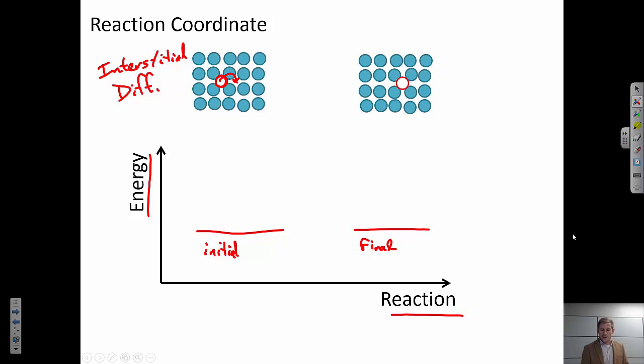But something has to happen to go from the initial to the final state. We can't miraculously disappear and reappear. So in this case, this atom would have to squeeze its way between these two other atoms. And you can see they're pretty close together. So in order for that to happen, this one would have to move a little bit down, and this one would have to move a little bit up.